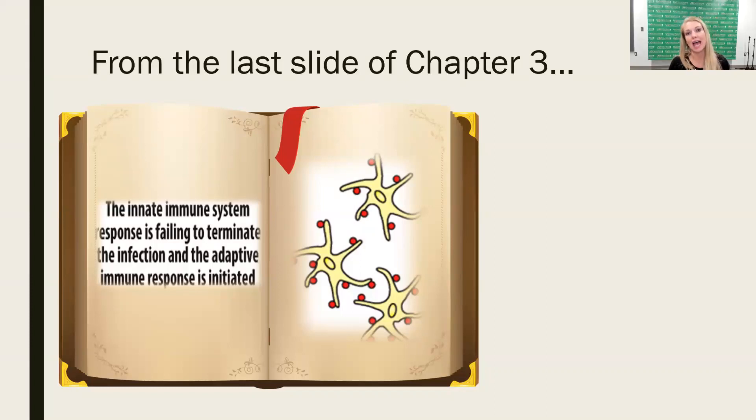And we looked at what happens when two things can happen. One, the number of dendritic cells were small enough that the innate immune system was able to keep it under control and fight the infection. And then there was no movement into the adaptive system.